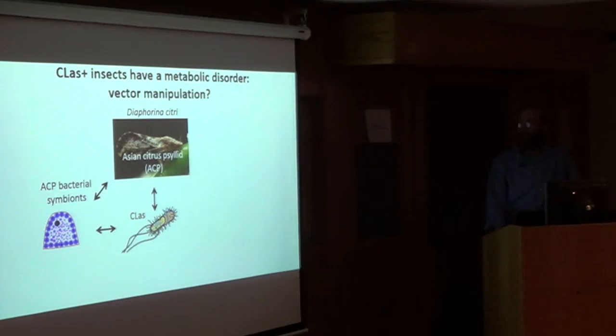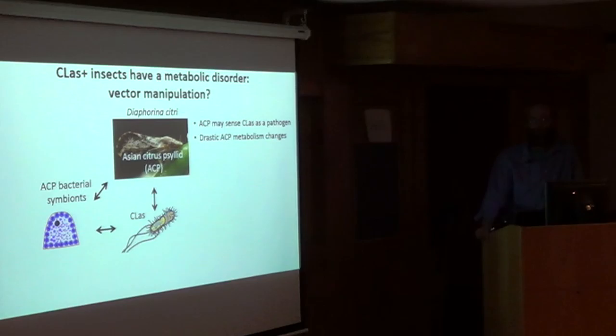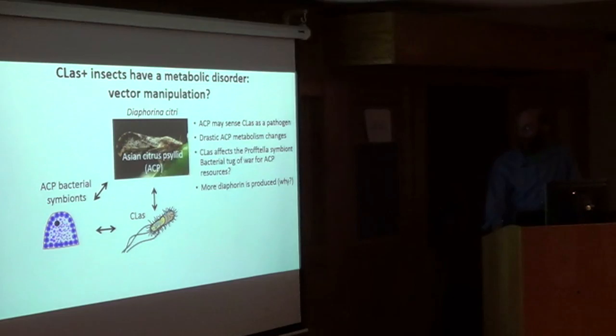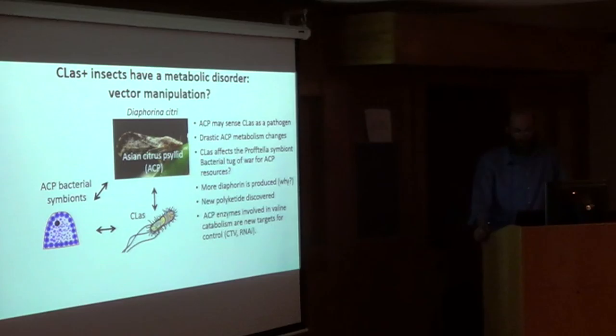Some of this data shows that infected insects have a metabolic disorder that could be the result of manipulation by the pathogen. The psyllid may be sensing Liberobacter as a pathogen of the insect, not just a plant pathogen. There are drastic metabolism changes in the psyllid upon infection, and infection with Liberobacter affects the Profftella symbiont. We're developing a model of potentially a bacterial tug-of-war between the symbiont and Liberobacter for resources of the ACP. There's more diaphorin produced upon infection with CLAS, and we discovered a new polyketide and identified enzymes in valine catabolism as potential targets for knockdown.